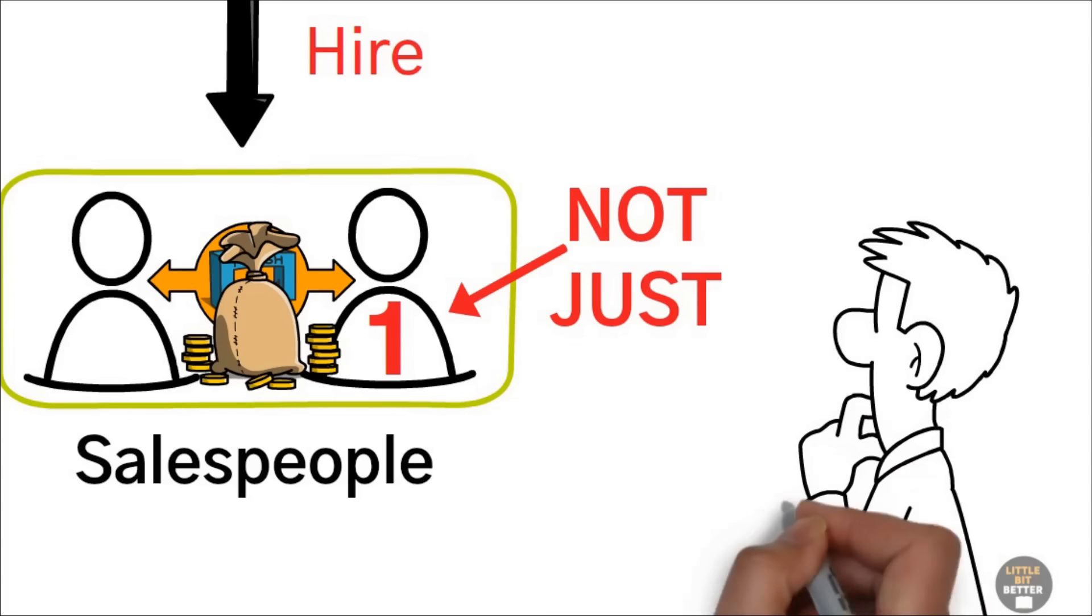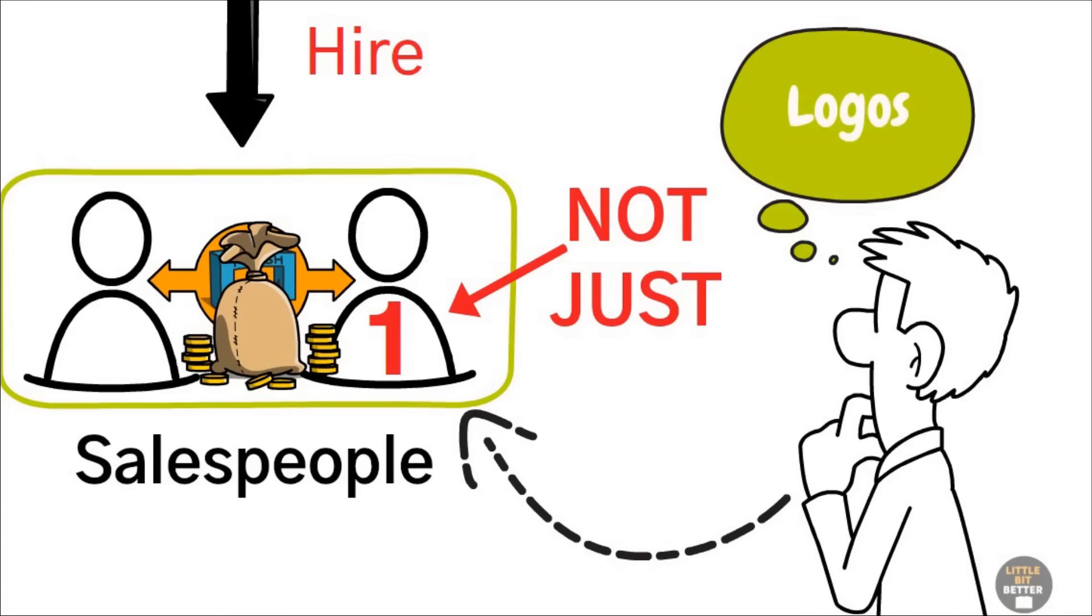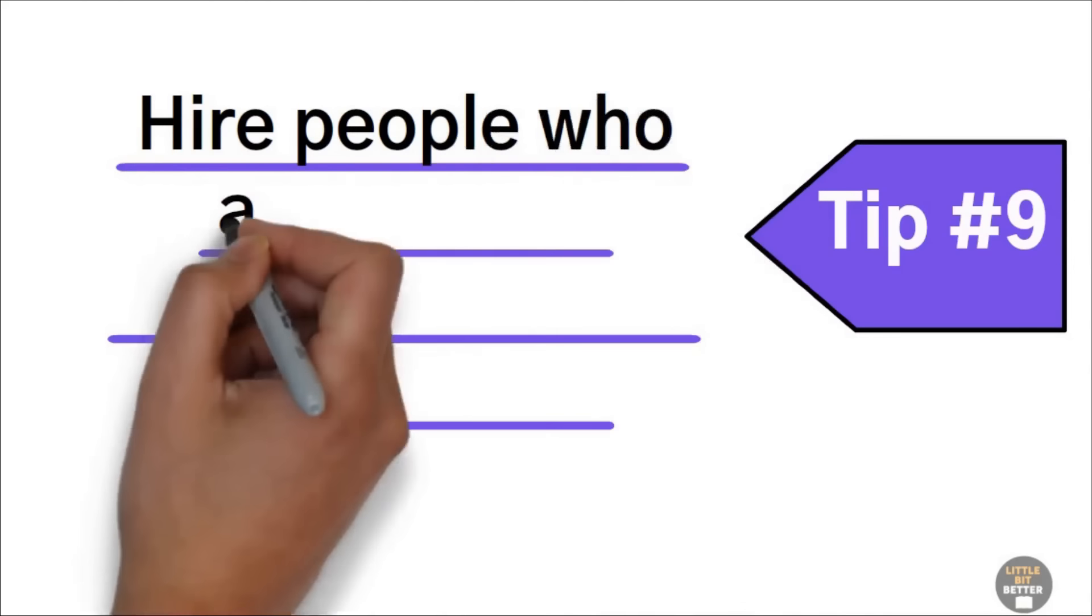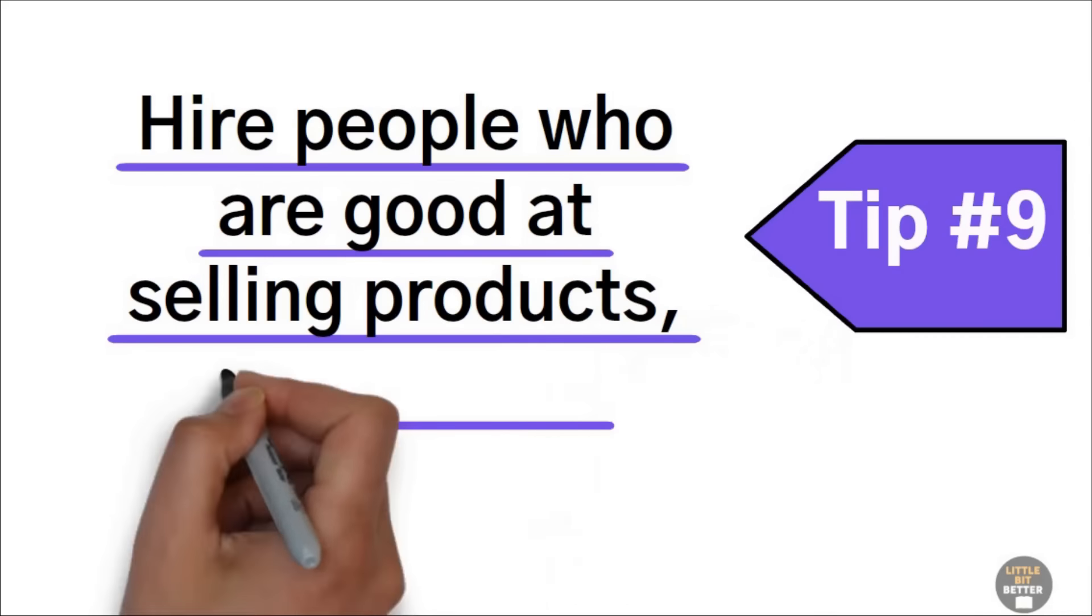Alex wondered how he could find one salesperson with experience selling logos, no less two of them. Ted's tip number nine, hire people who are good at selling products, not services.